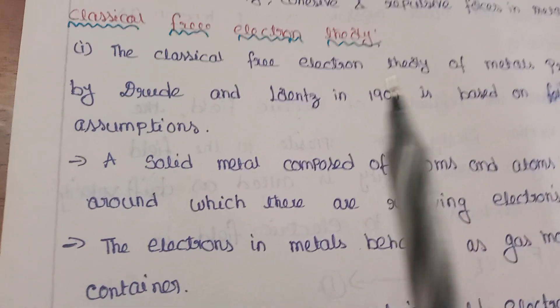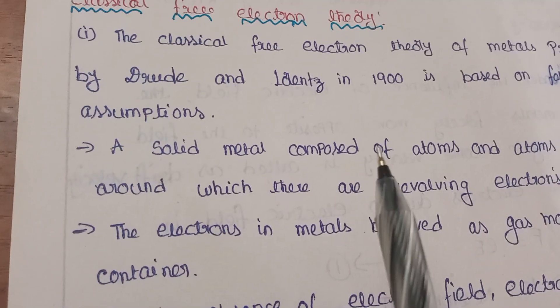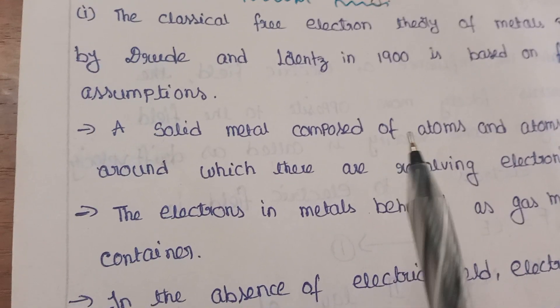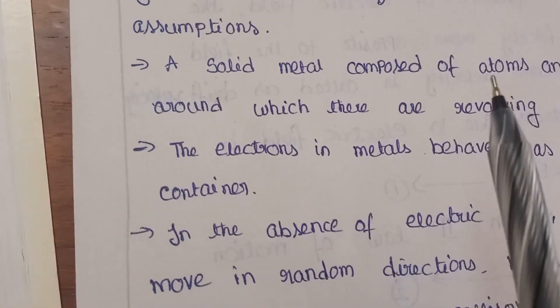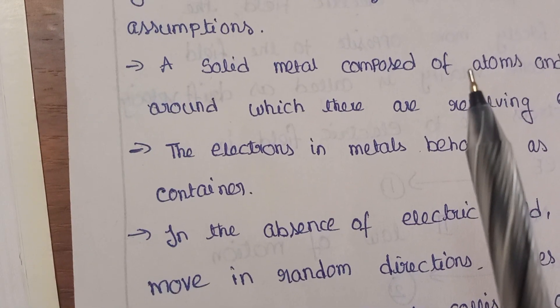Let us consider a metallic conductor. When there is no application of an electric field, all the free electrons move in random directions and the net current flow is zero.